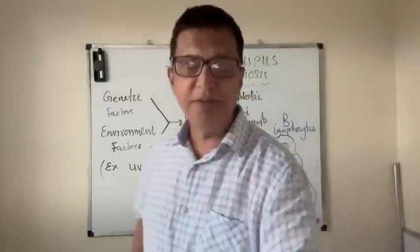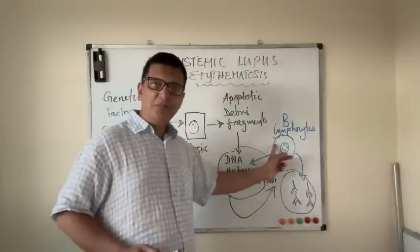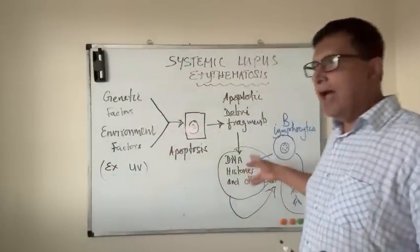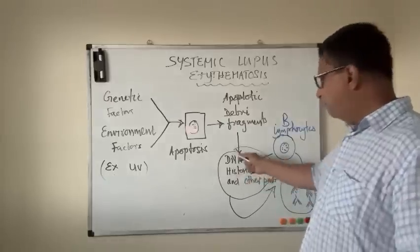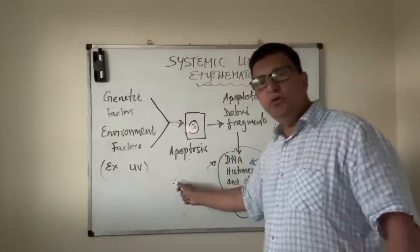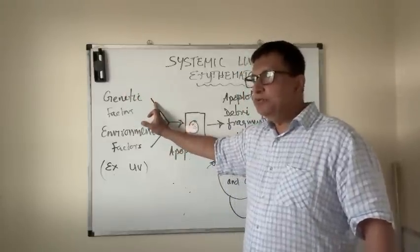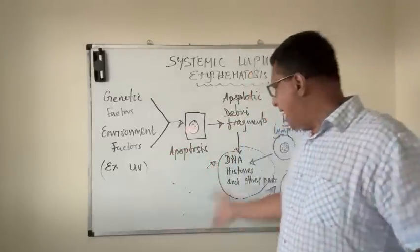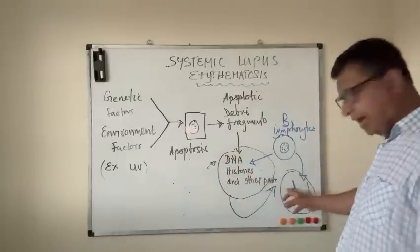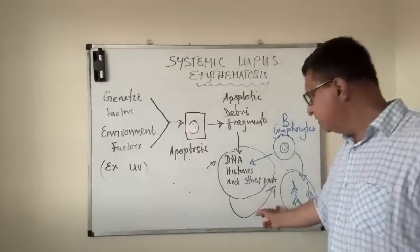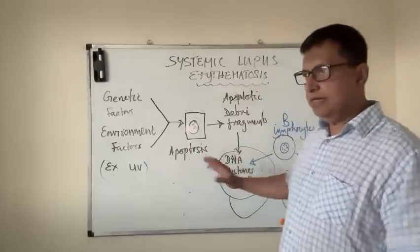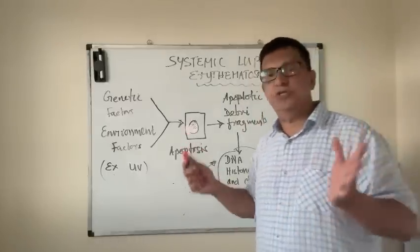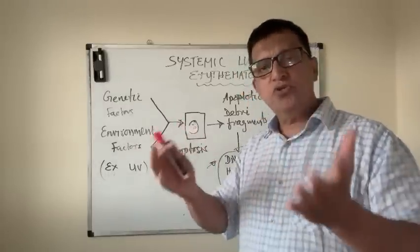These antibodies, for example anti-nuclear antibodies, circulate in the body and bind to these particles, causing immune complexes. Genetically predisposed individuals have a problem clearing these apoptotic debris fragments from the system, so they accumulate. As a result, you get more and more antibody formation and more antigen-antibody complexes, resulting in various chemical reactions which cause inflammation all over the body.